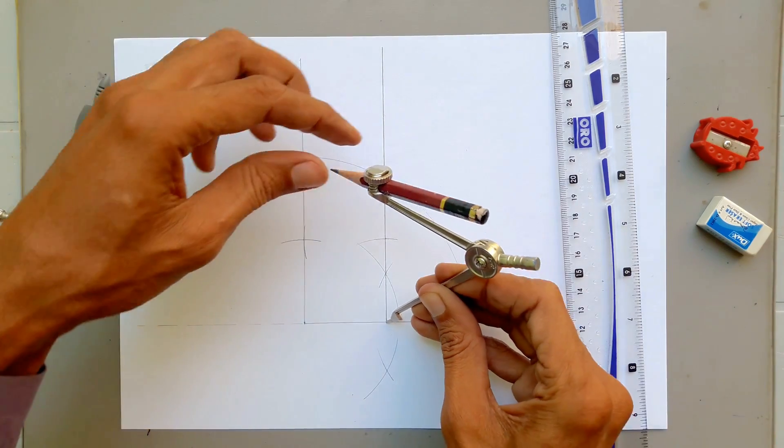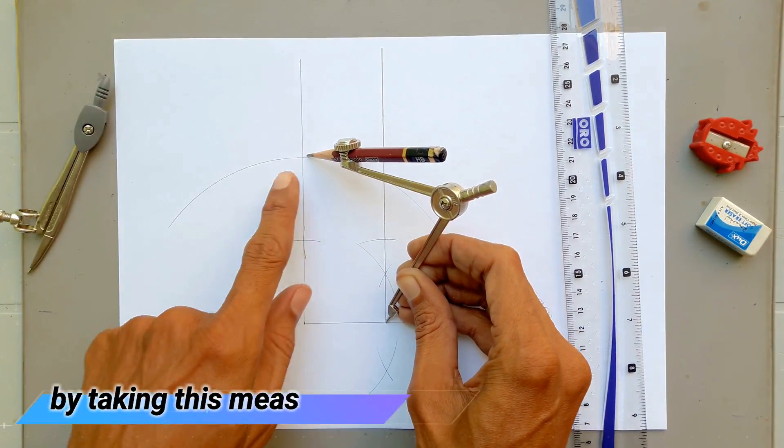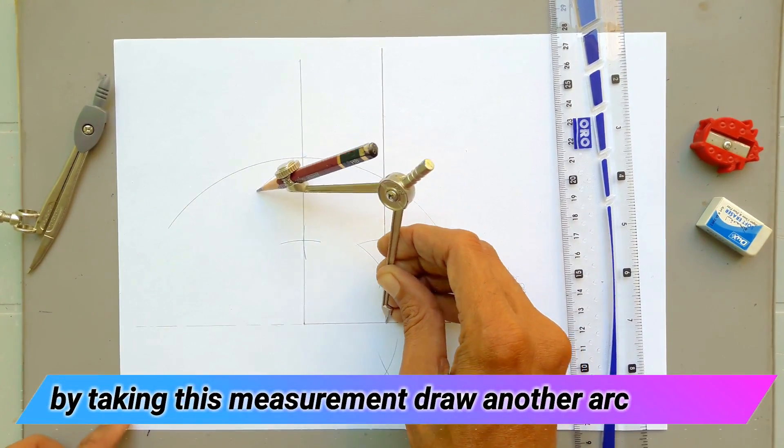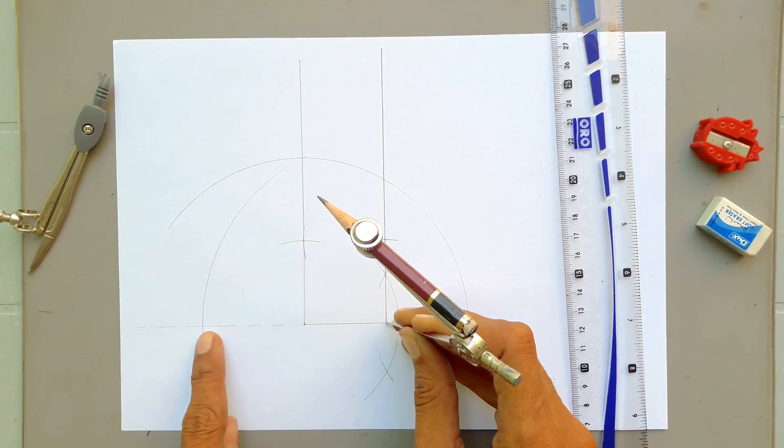Now we have to open the compass from midpoint to this point, and draw an arc to the extended line. So we've got another point.